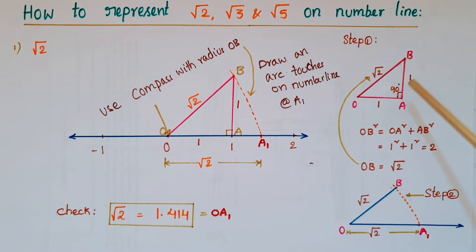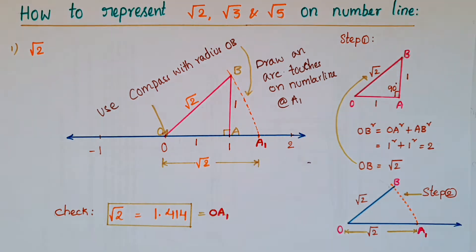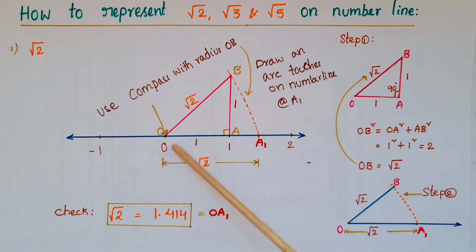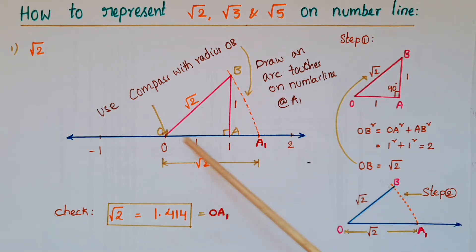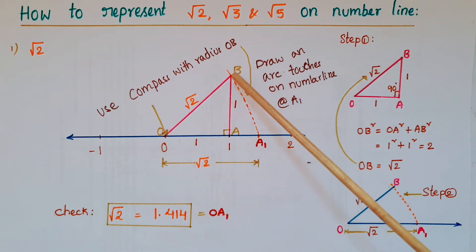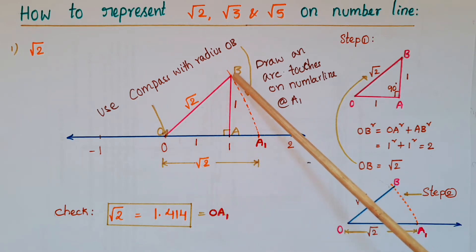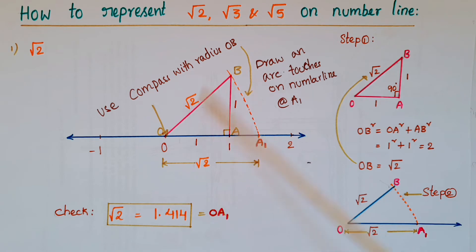Now we apply the same triangle on the number line. Draw a number line and place O at 0 and A at 1, so OA is 1 unit. Draw a perpendicular line at A with 1 unit — that is AB. Then join O and B; that length will be root 2.